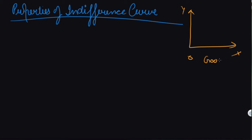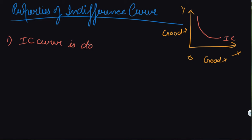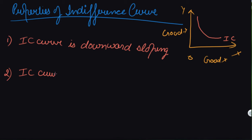This is good X and this is good Y. So let's make an indifference curve — this is how we make one. The first property we derive from the IC curve is that it is downward sloping. The IC curve is downward sloping. The second property is that the IC curve is convex to the origin. The direction of the IC curve is convex to the origin.